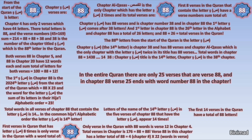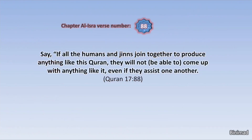This is yet another astonishing highlight of this miraculous code. Take a step back, relax, and watch this video again, stopping at each revelation — words simply cannot describe how amazing this is. The code for the letter Saad is truly a breathtaking mathematical symphony. Nothing can be more appropriate than to end with verse 88 in chapter Al-Isra: 'Say, if all the humans and jinn join together to produce anything like this Quran, they will not be able to come up with anything like it, even if they assist one another.'